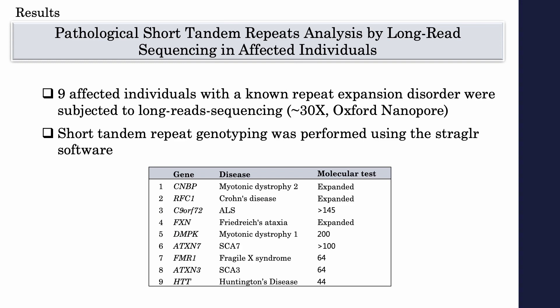Looking forward, we want to allow a single test for all the pathogenic expansions that are known, using long-read sequencing to overcome the size limitation of short reads. For this, we performed a proof-of-concept project. We took nine affected individuals with known repeat expansion disorders, with different disorders as can be seen here, and subjected them to long-read sequencing.